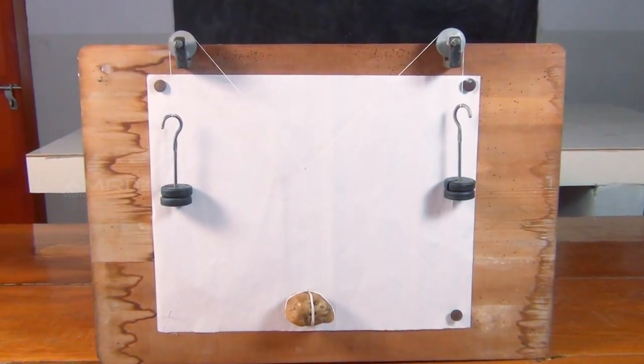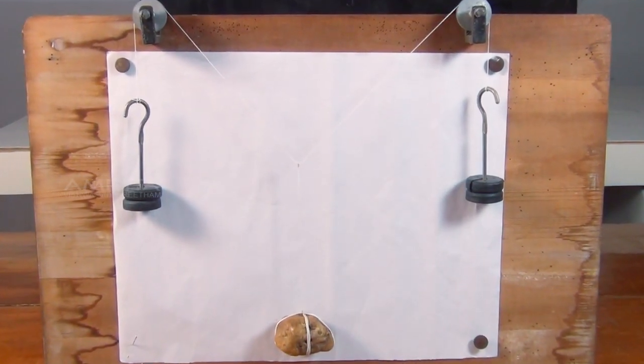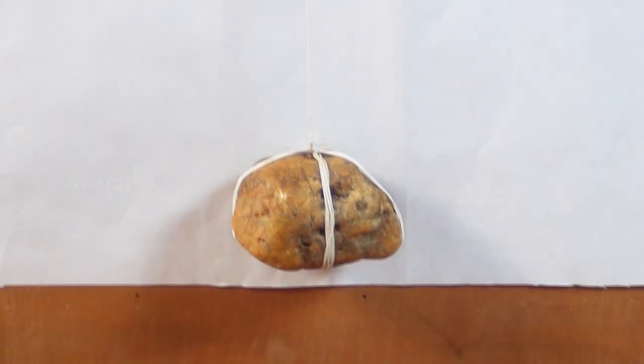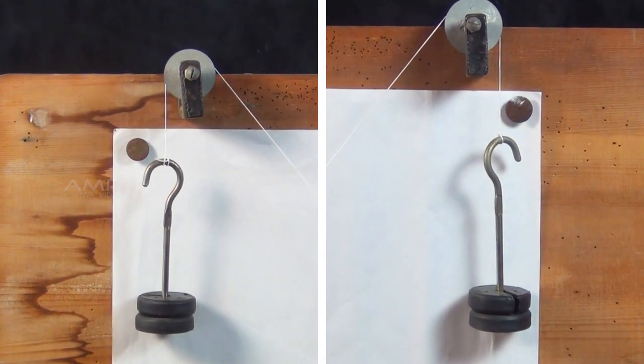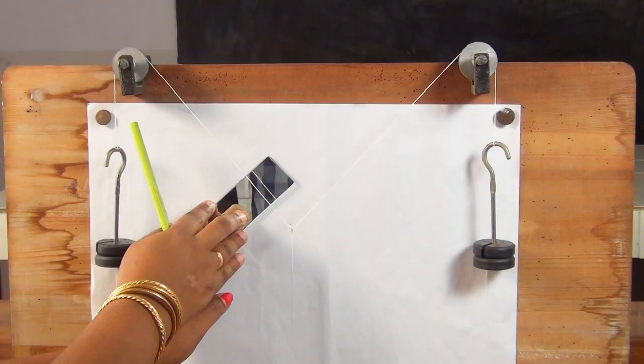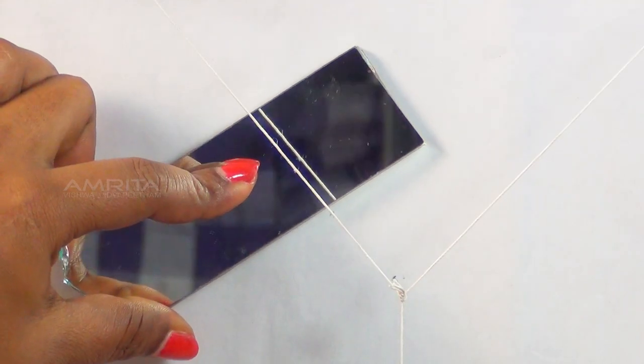Set up the grave sands apparatus by tying three pieces of thread in which the center one carries the unknown body and the other two pass through pulleys and carry equal weights. Trace the position of the images of the thread on the paper with the help of a mirror strip.